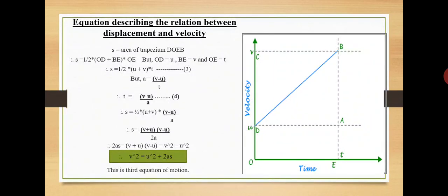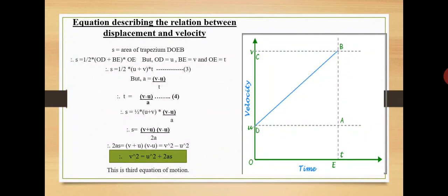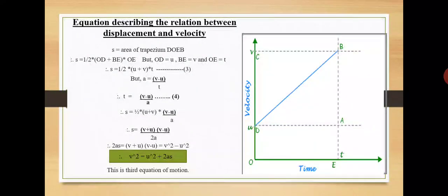Equation describing the relation between displacement and velocity: the distance covered by the object in time t is the area of quadrilateral DOEB. Since DOEB is a trapezium, we use the trapezium area formula. s = area of trapezium DOEB = ½ × (sum of parallel sides) × (distance between parallel sides). Therefore, s = ½ × (OD + BE) × OE. Since OD = u, BE = v, and OE = t, we get s = ½ × (u + v) × t. Let this be equation number three.